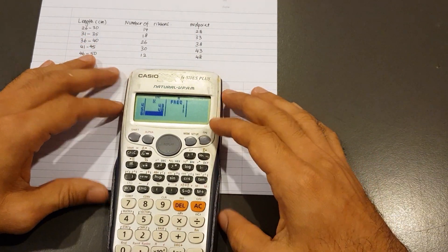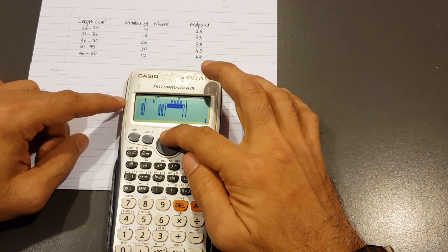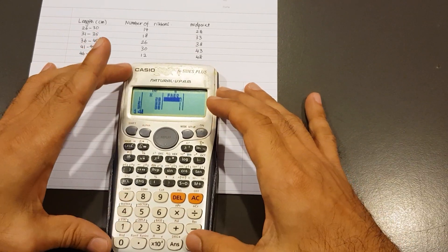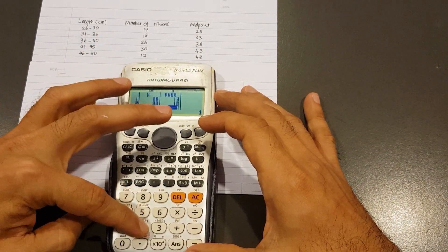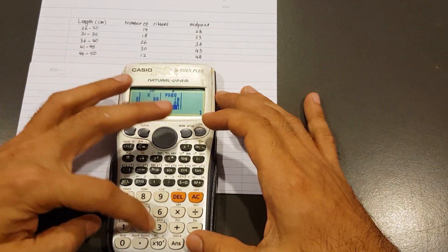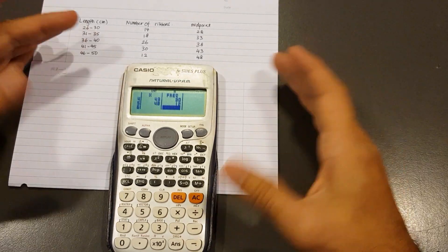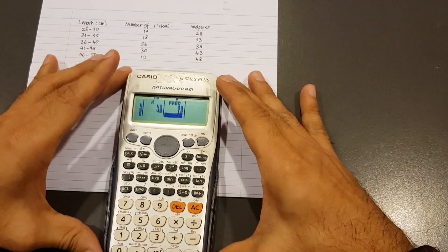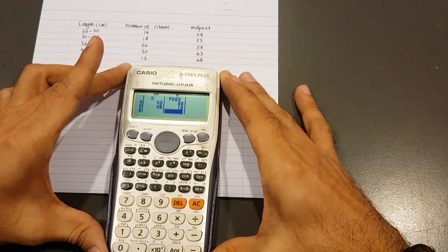Now for the frequency. I jump to the right side, go all the way back up to the first row. First frequency is 14. One, four, equals. Second one is 18. Next one, 26, equals. 30, equals. And finally, 12, equals. Once all the data has been put into the correct columns, we're ready.